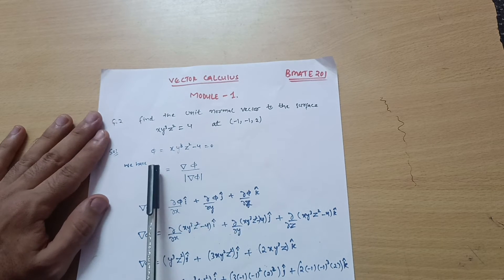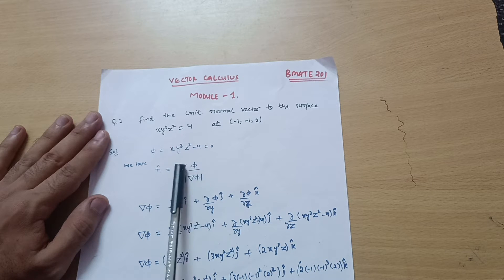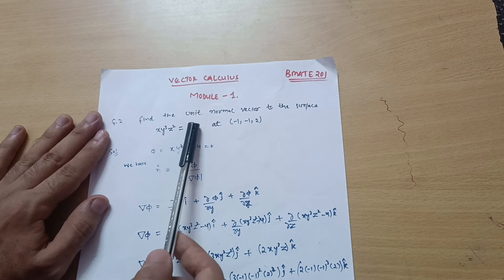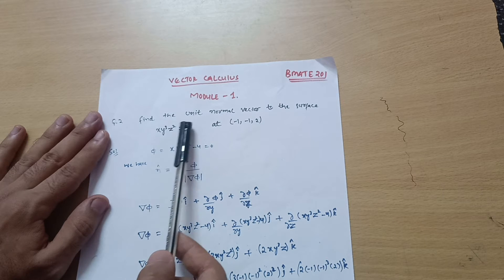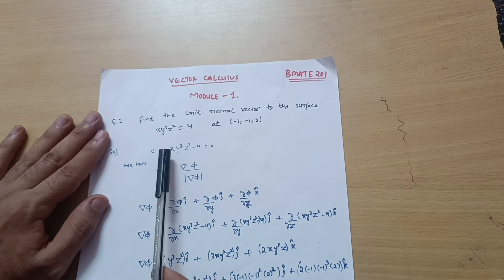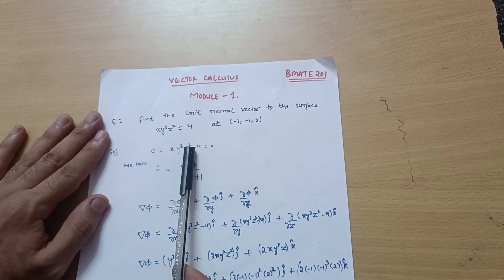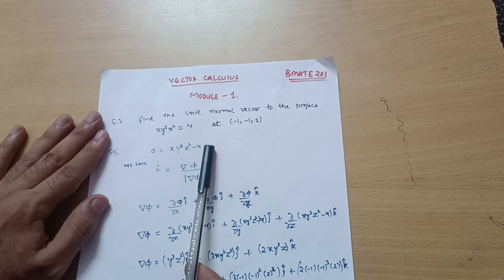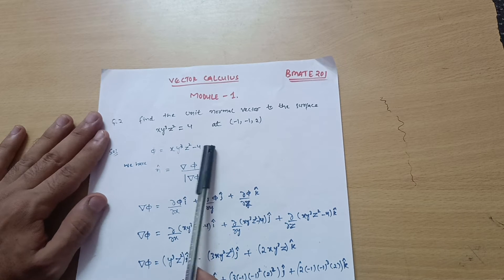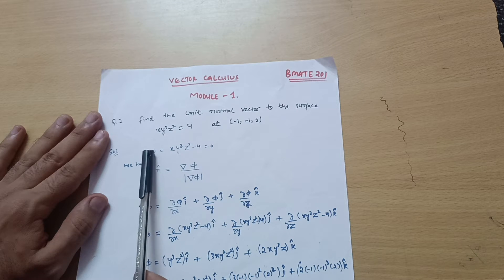The formula for the unit normal vector is n̂ = ∇φ / |∇φ|. In this question, the scalar function φ is given. So φ = xy³z² − 4 = 0, where I have shifted the 4 to the left-hand side.